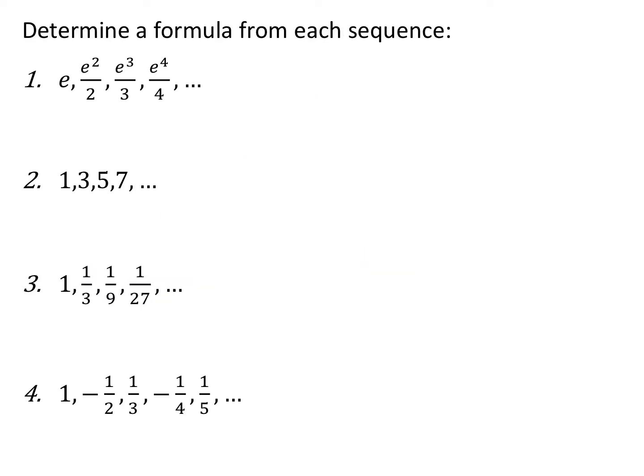Given a sequence, you want to be able to write the general formula or the nth term or the explicit formula. So if you're looking at these four sequences, we want to write out what the general formula is — it's really looking at a pattern. Think of it as writing an equation or a function, where your inputs are 1, 2, 3, 4. So how can I write each term as something with my input n? What's the pattern to it?